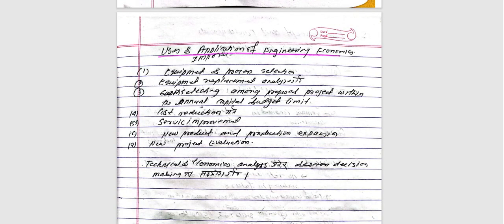The applications of engineering economics include equipment and process selection, equipment replacement or improvement, and consideration of the environment in which equipment is used. We also consider the annual capital budget limit and modifications to equipment as part of the application of engineering economics.